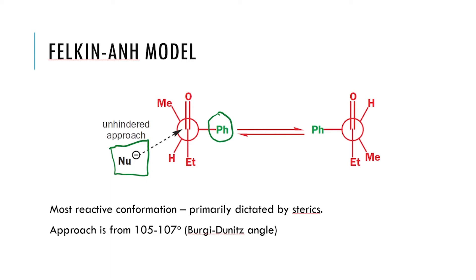In the Felkin-Anh model, sterics is really important because the largest group being perpendicular to the carbonyl is dictated by sterics. The more reactive conformer — the trajectory with the lowest barrier — is the one where the smallest group is present closest to the trajectory. Sterics plays a dominant role. The two important points in this model are sterics and the Bürgi-Dunitz angle.